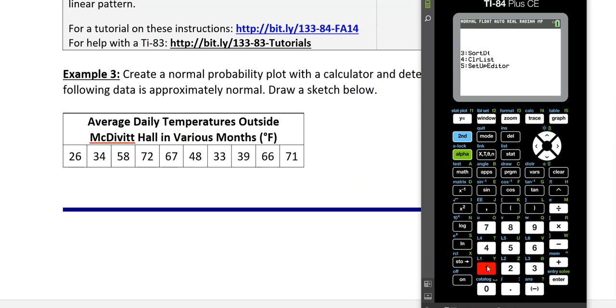So you go to Stat, you go to Edit, and you type in your data values. So for me, I have these 9 or 10 values for the average daily temperature outside McDevitt Hall. So there we have those temperatures, and then I go to Stat Plot, which is above Y equals. I choose number 1.